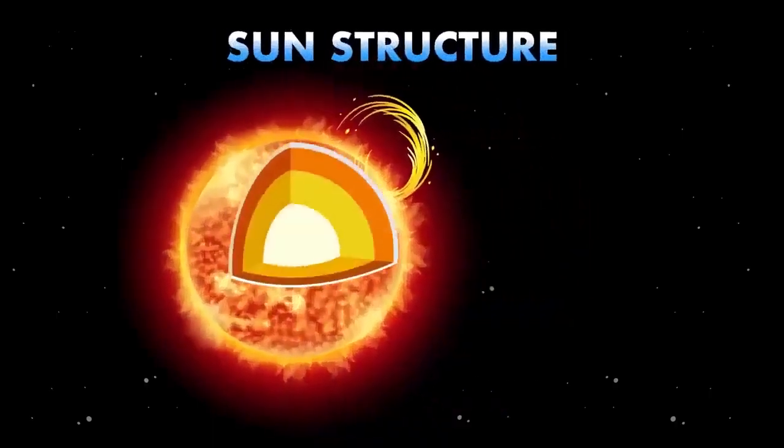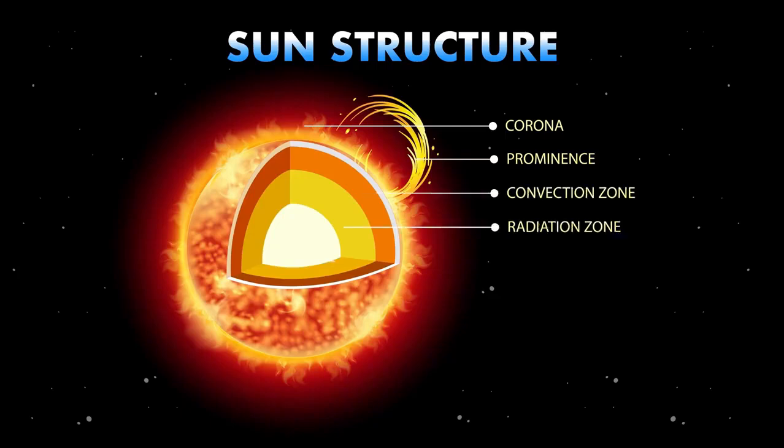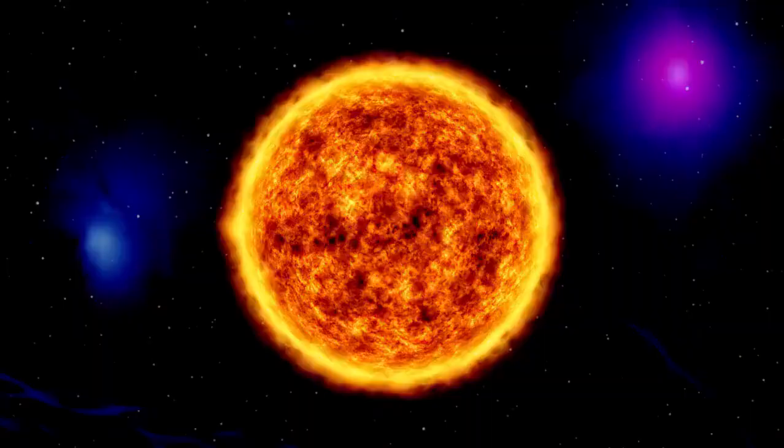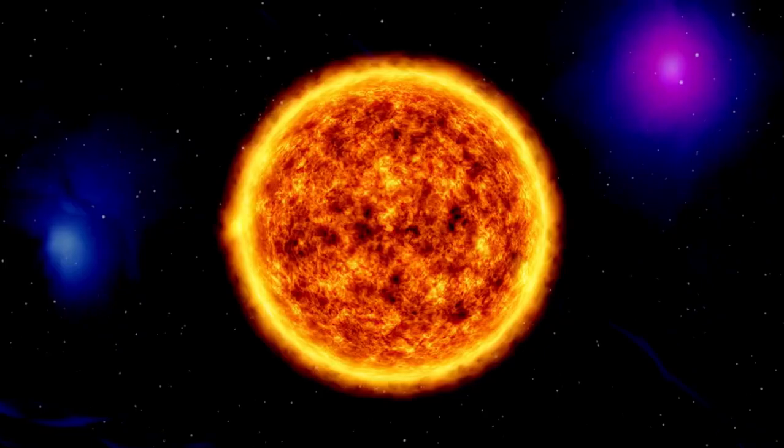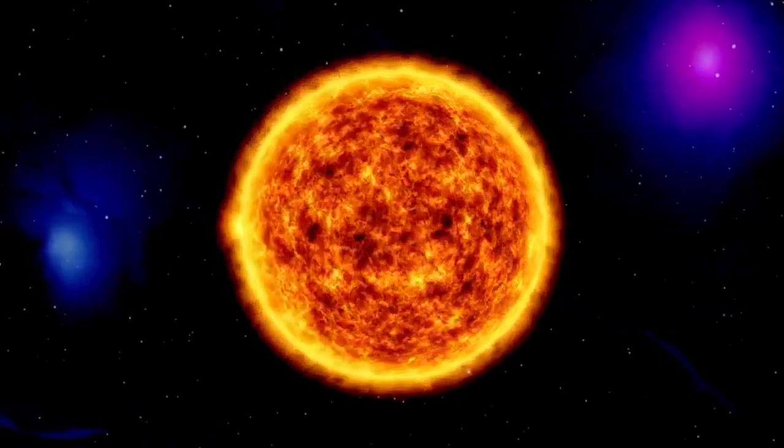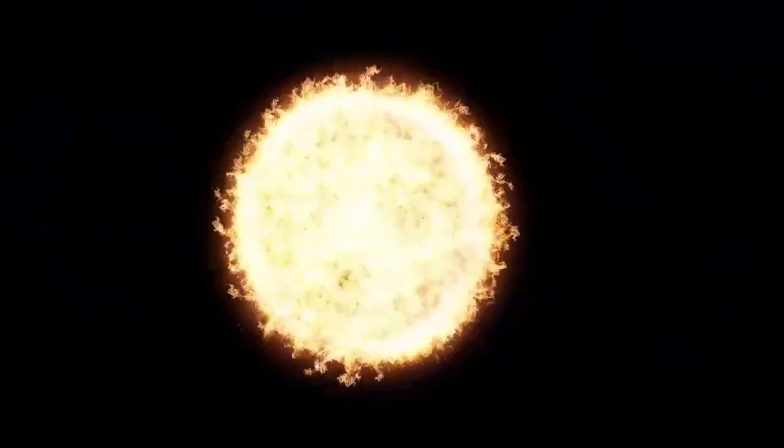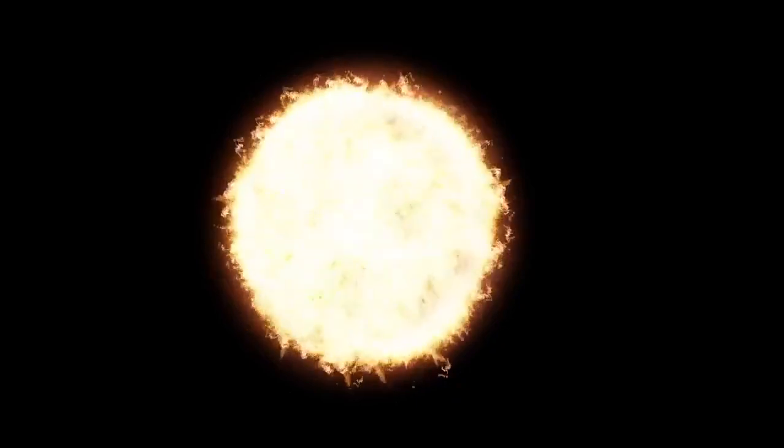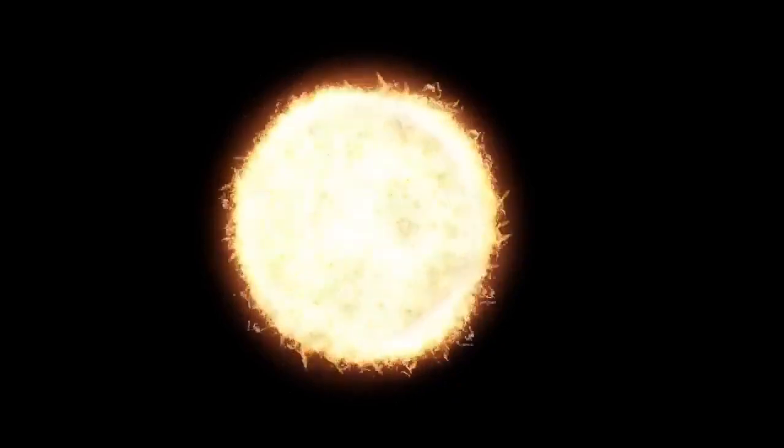As hydrogen fusion slows in its core, the outer layers expand, causing the star to grow even larger. Simultaneously, helium accumulates around the core, triggering a secondary fusion process known as helium envelope burning. In this phase, helium atoms fuse to create heavier elements like carbon and oxygen, releasing bursts of energy that counteract the gravitational forces trying to collapse the star.